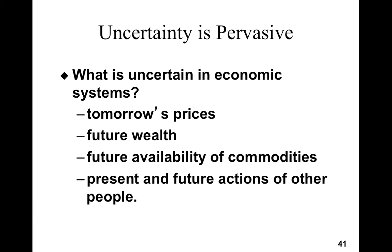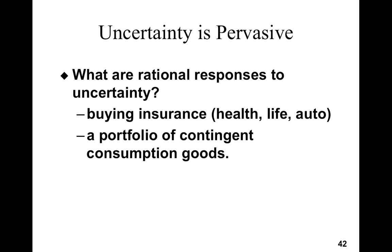However, that doesn't mean that we cannot make decisions under uncertainty. We have to figure out a way of dealing with uncertainty. One way people deal with uncertainty is that they buy insurance — auto insurance, life insurance, health care insurance, and so on. Or sometimes you create a portfolio of contingent consumption goods.